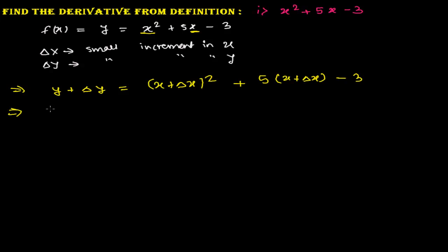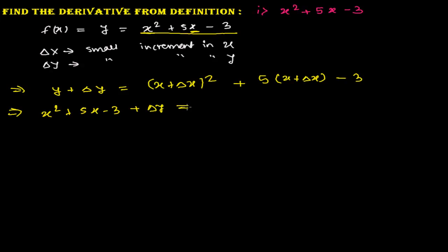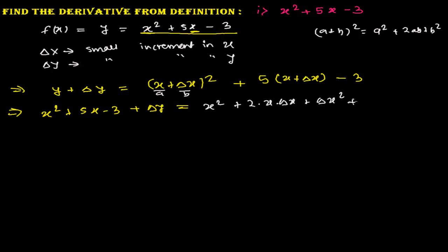Now the function becomes: y + Δy = (x + Δx)² + 5(x + Δx) − 3. We can substitute the known value of y on the left side: x² + 5x − 3 + Δy = (x + Δx)². Using the (a + b)² formula — a² + 2ab + b² — this expands to x² + 2x·Δx + (Δx)². Then 5 multiplied by (x + Δx) gives 5x + 5Δx, minus 3.